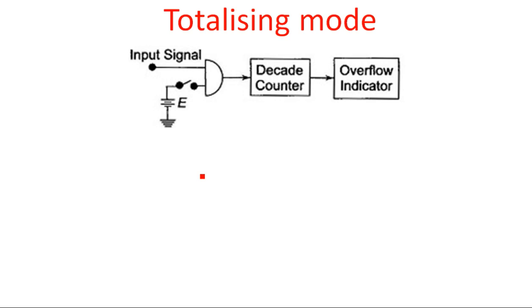In the totalizing mode, the input signal is applied to one of the two inputs of the gate. The other input is a constant DC supply. When the switch is closed — by default it is in open state — the input signal continuously applies to the gate. With the DC supply providing a constant plus 5 volts, the gate receives a continuous logic one state.